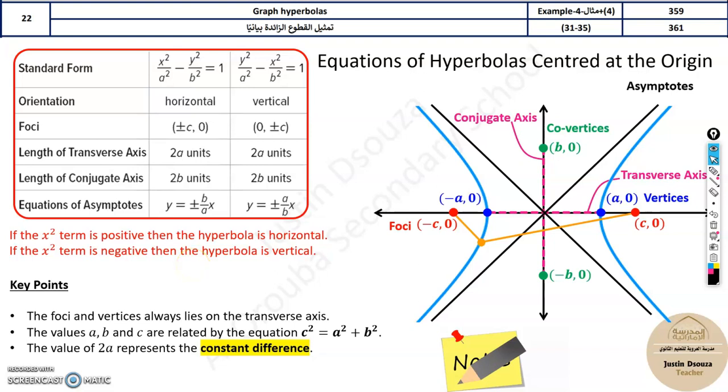The 22nd topic is on hyperbolas. It is a writing topic, so we will solve in detail how to solve these problems. Now here this is a hyperbola. It'll have two branches, like two parabolas, and then these are the vertices between the two points and these are the foci.